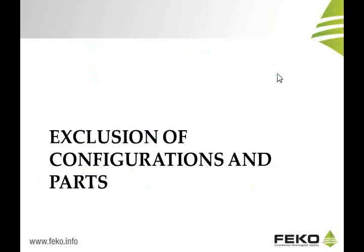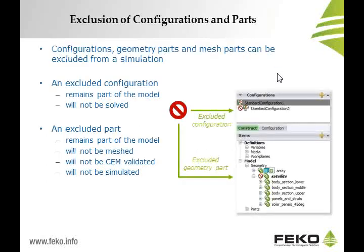Moving away from CAD fixing, another new extension in CAD FECO is the ability to exclude configurations and parts — both mesh and geometry — from a specific model. In the past, we already had the ability to include and exclude solution requests. We have extended that concept to whole configurations and also to certain parts of your model on the mesh or geometry side. Rather than deleting a structure, one can exclude it — it won't be meshed or part of the simulation, but it remains part of the CAD FECO model.